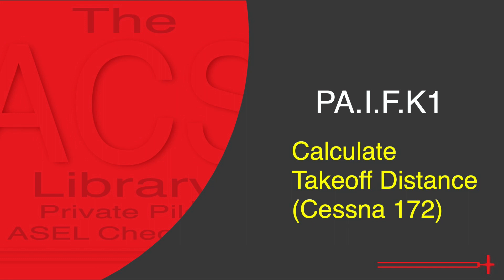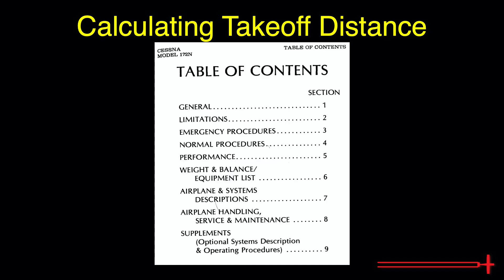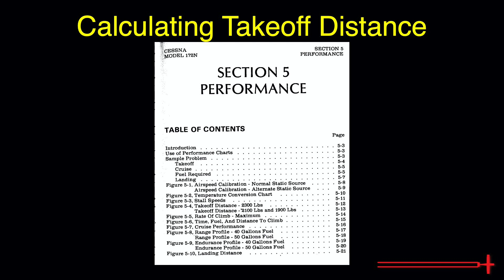Anytime we're talking performance calculations, we'll want to have our aircraft's POH handy. Open up to the Table of Contents and find the Performance section. Once we've turned to the Performance section, let's jump into the Table of Contents and look for takeoff distance data.